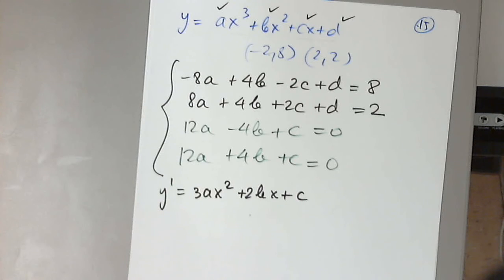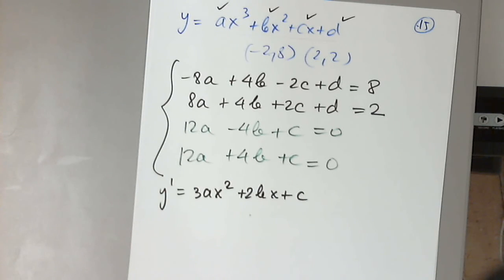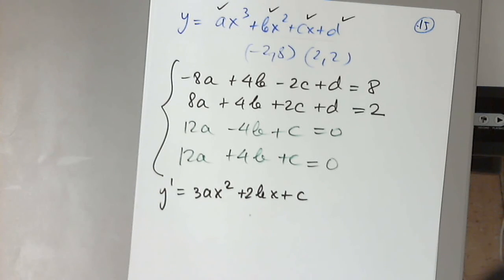When I plug negative 2 into the derivative, I get 12a minus 4b plus c equals 0. When I plug in 2, I get 12a plus 4b plus c equals 0. These four equations represent that the graph passes through these two points and has a horizontal tangent — meaning the slope is 0 — at those points.